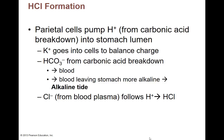As blood flows past the stomach, it picks up bicarbonate ions and becomes more alkaline — that's the alkaline tide. The other thing that happened: hydrogen and chloride both went into the stomach. H and Cl together make HCl — we've just made hydrochloric acid. That's where it comes from — really from the breakdown of our carbonic acid. Our breathing regulates how much carbonic acid is in our blood system, so the respiratory system and our digestive system are related.